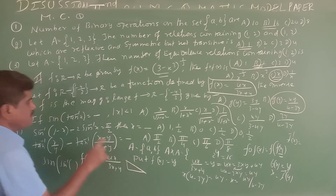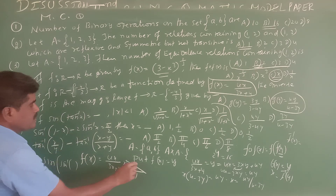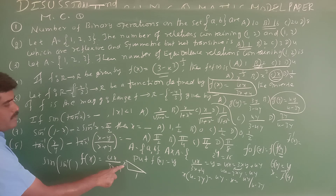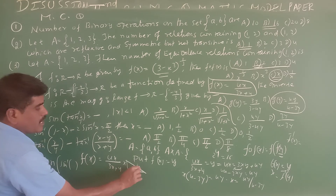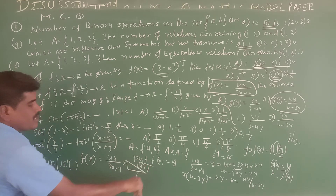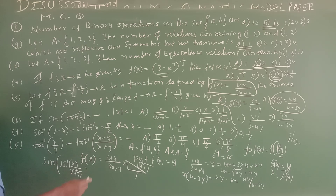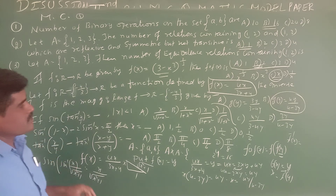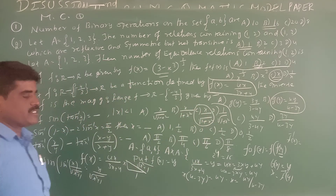Using a right-angled triangle: opposite side = x, adjacent side = 1, so by Pythagoras the hypotenuse = √(x²+1). Therefore sin(tan⁻¹x) = opposite/hypotenuse = x/√(x²+1) = x/√(1+x²). Option C is the answer.